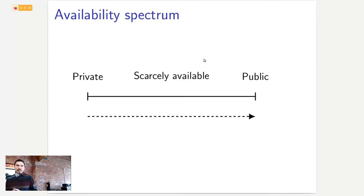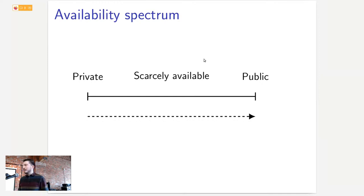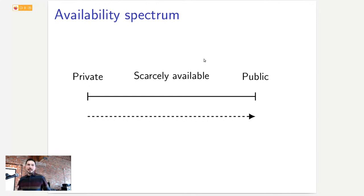Data availability has a spectrum. Data can be private, where only the data owner knows about it, or it can be public so everyone knows about it. An example of public data is blockchain data — it's publicly available and impossible to monetize because no one would pay for data available to everyone. In terms of monetization, the scarcely available part is the sweet spot.